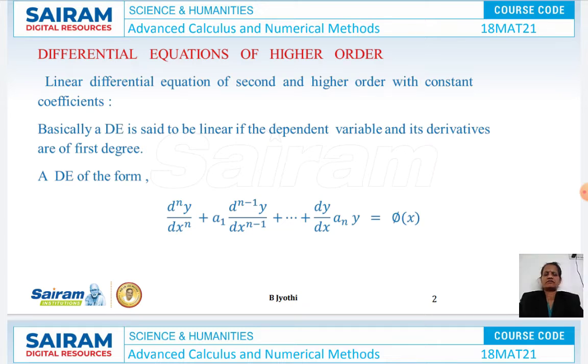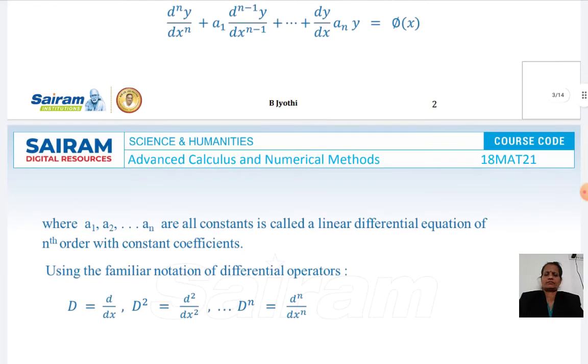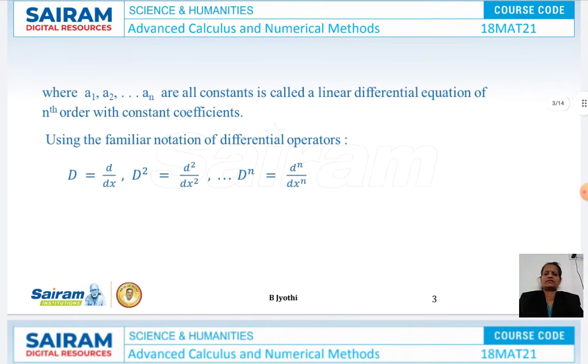The differential equation will be of the form d^n y/dx^n plus a₁ d^(n-1) y/dx^(n-1) plus etc. dy/dx plus aₙ y equals φ(x), where a₁, a₂, etc. are all constants. This is called a linear differential equation of nth order with constant coefficients.